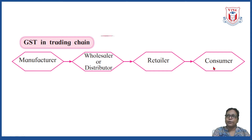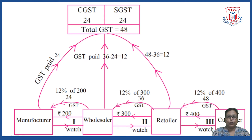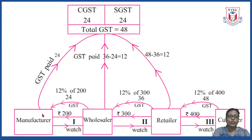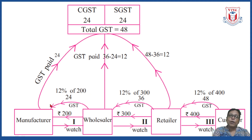Let us take the example of a watch to see how GST is calculated in the trading chain. The chain is: manufacturer, wholesaler, retailer, and customer. The manufacturer produces the watch valued at rupees 200. GST for watches is 12%, so 12% of 200 equals rupees 24. The manufacturer pays GST of rupees 24.